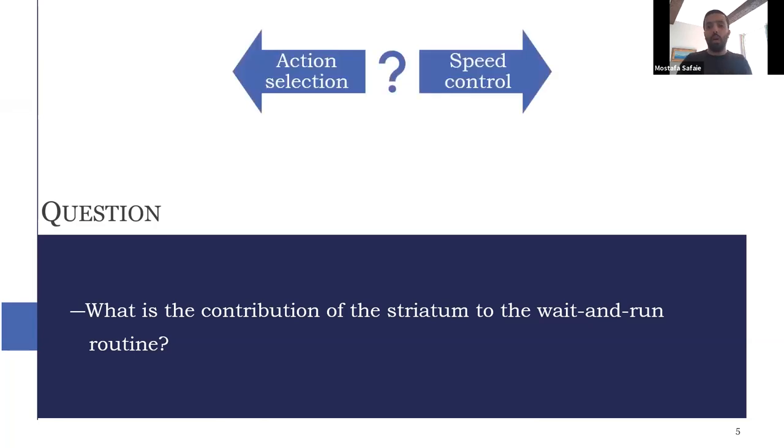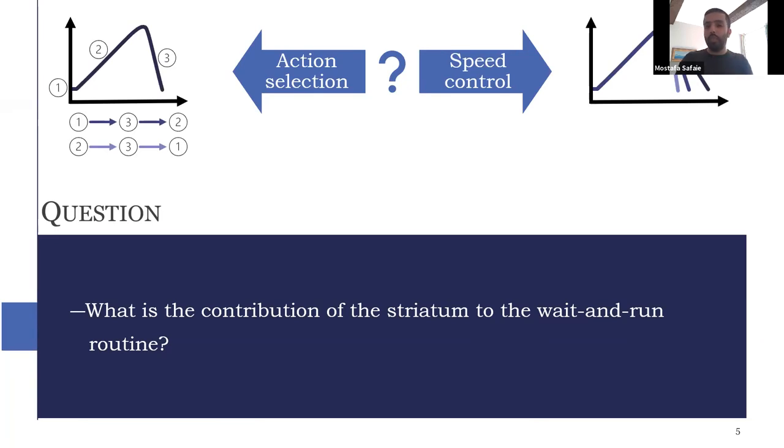And those two hypotheses predict different phenomena. If it's about speed control, we would expect different speeds in the acceleration phase of the routine. And if it's about action selection, we expect a kind of a different sequence of actions during the task.